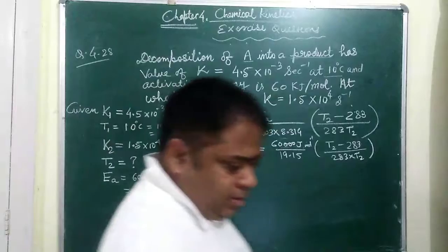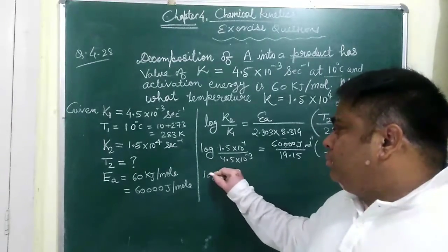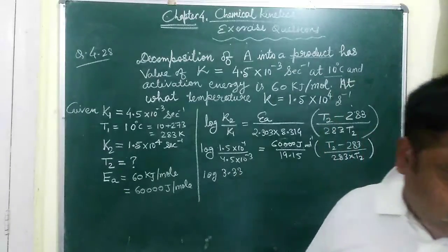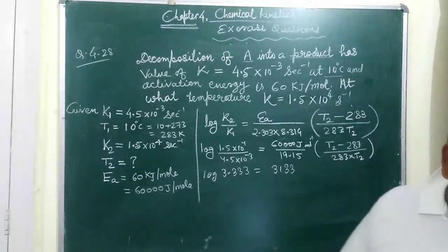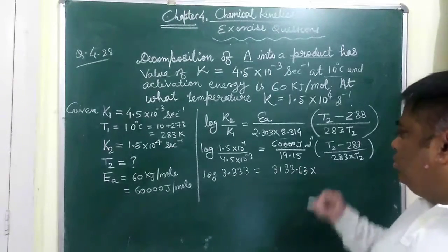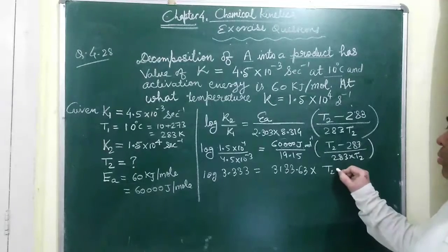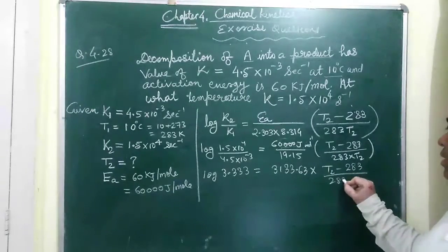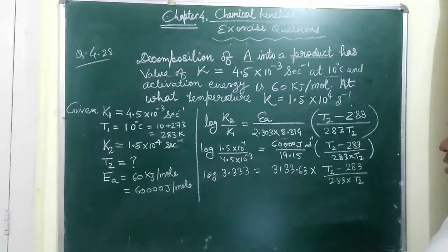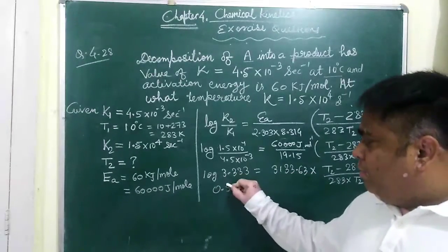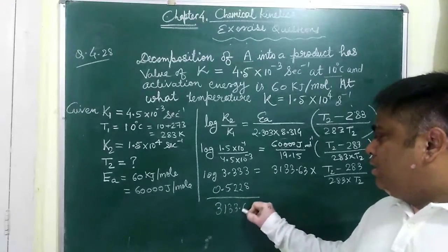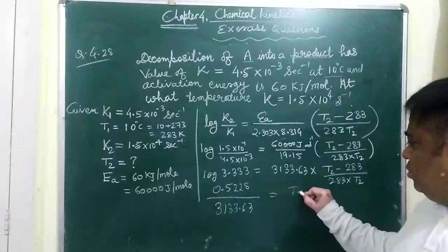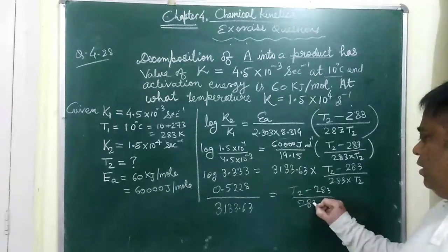So this value we can find out separately. This will be log 3.333 is equal to 3133.63 into T2 minus 283 by 283 into T2. Now very simple calculation is there. We will cross multiply but we will find out the value of this. So the value of this will be equal to 0.5228. This we can bring it here. 3133.63 is equal to T2 minus 283 by 283 into T2.